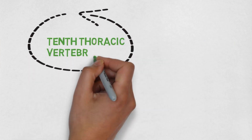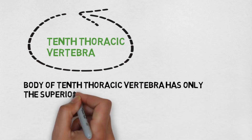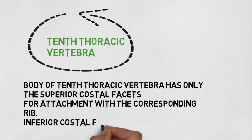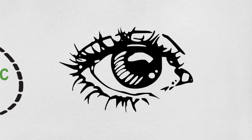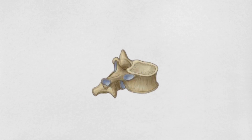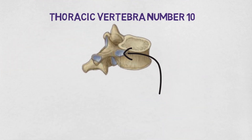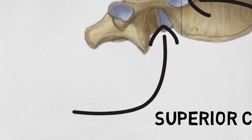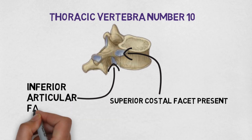Then we come to the tenth thoracic vertebra. The body of the tenth thoracic vertebra has only the superior costal facets for attachment with the corresponding rib. The inferior costal facets are absent in it. This is the tenth thoracic vertebra and this is the superior costal facet. Don't confuse this with the inferior costal facet — that structure is the inferior articular facet, not the inferior costal facet.